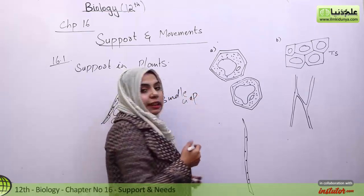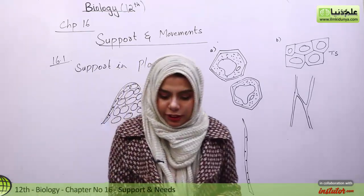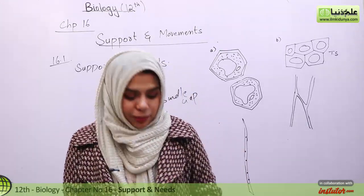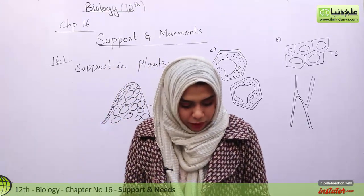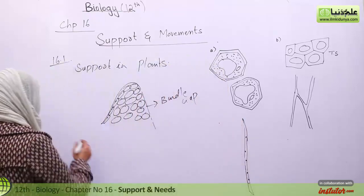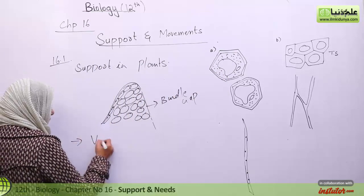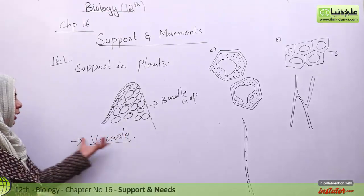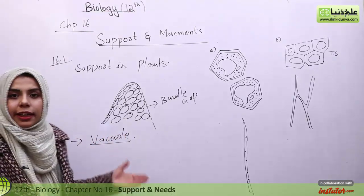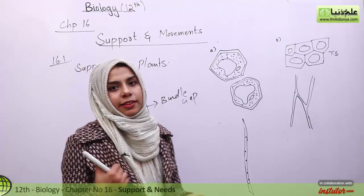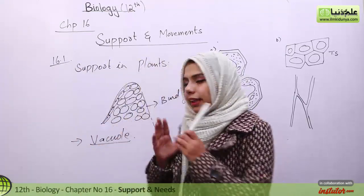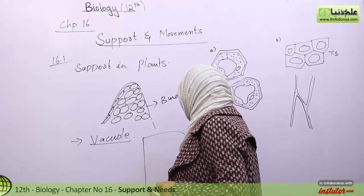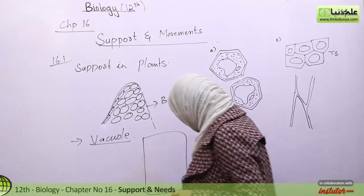There are additional cells which give strength to the plant, which give support to the plant. Next, another organelle that gives support to the plant is the vacuole. The plant cell has a larger vacuole.